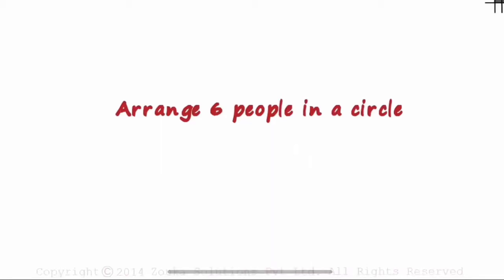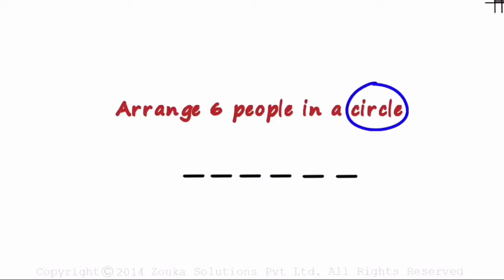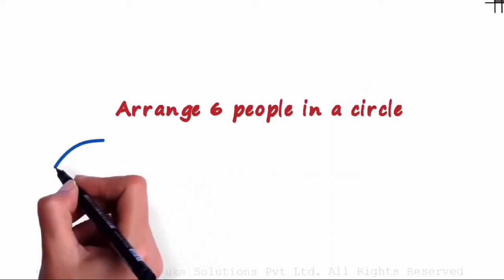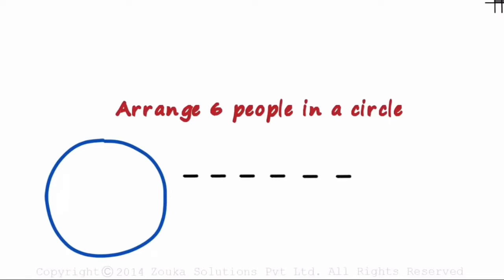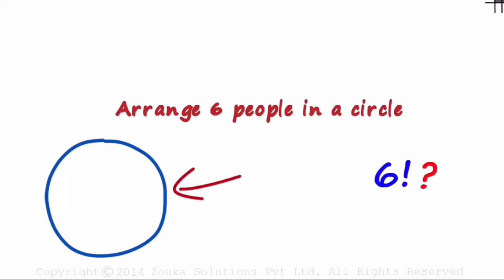We have seen problems in which we arrange people in a row. But this time, we have to arrange them in a circular fashion. Six people will be seated like this. In how many ways can we arrange six people around this circle? If we had to arrange them in a row, we know that it can be done in six factorial ways. Will it be the same if they have to be seated in a circular fashion?